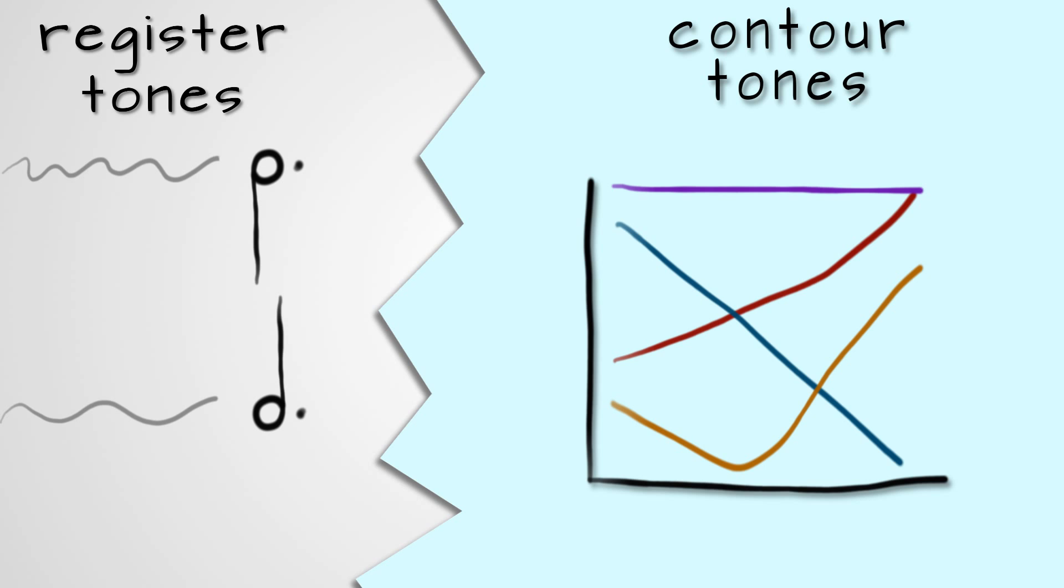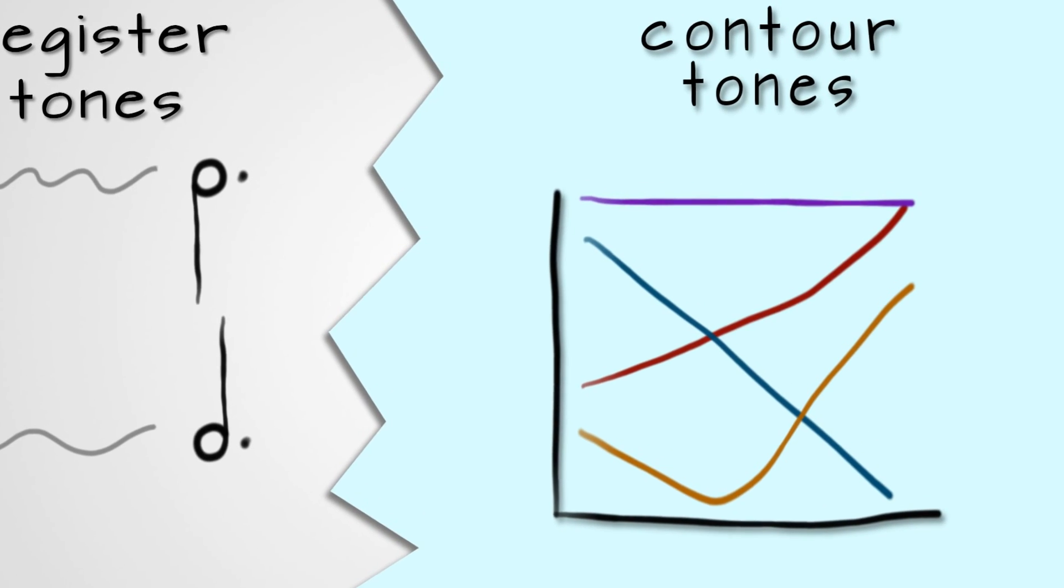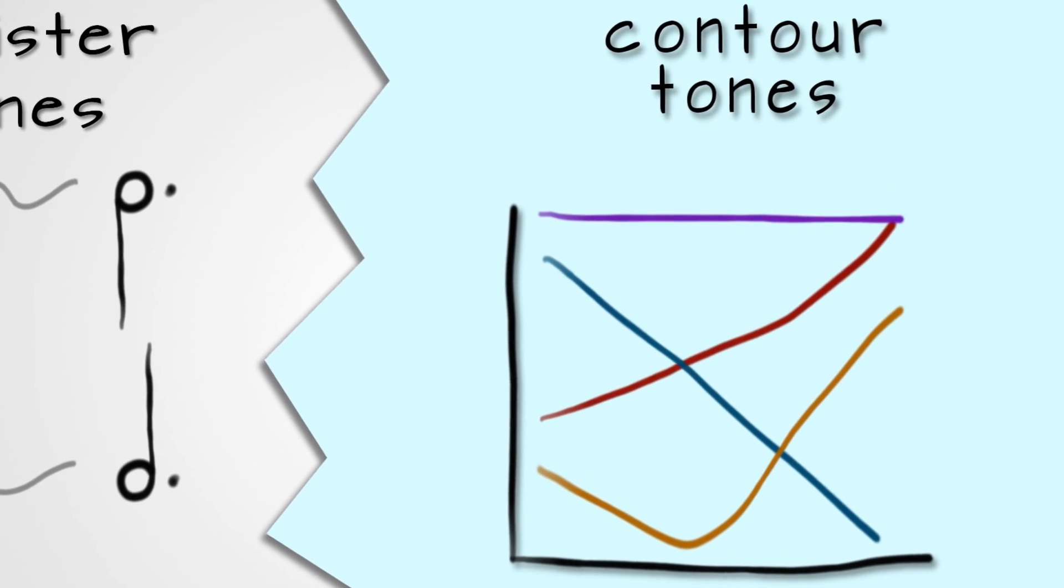In Mandarin, a syllable can be pronounced in four different contour tones. In Thai, there are five contour tones.